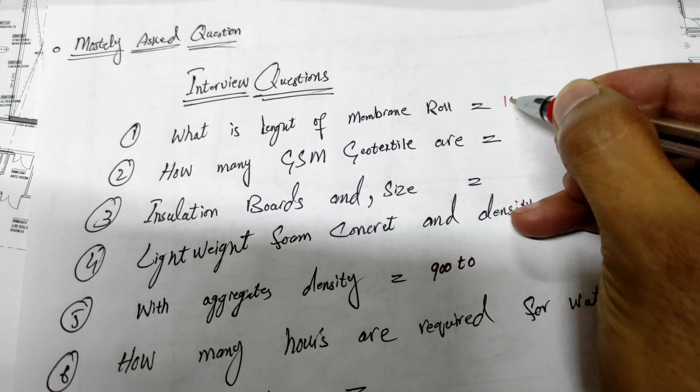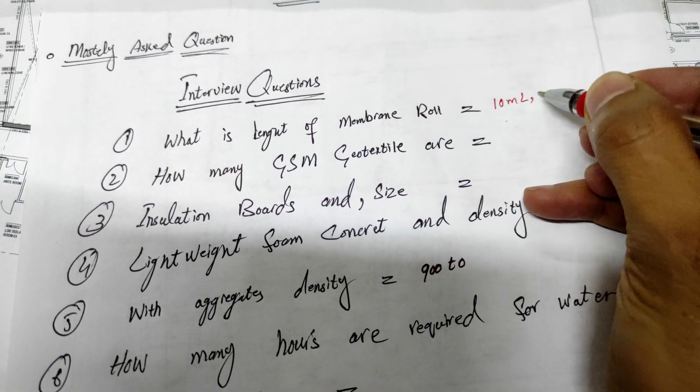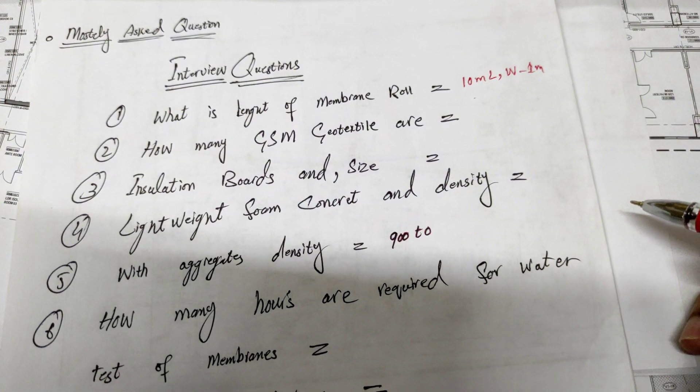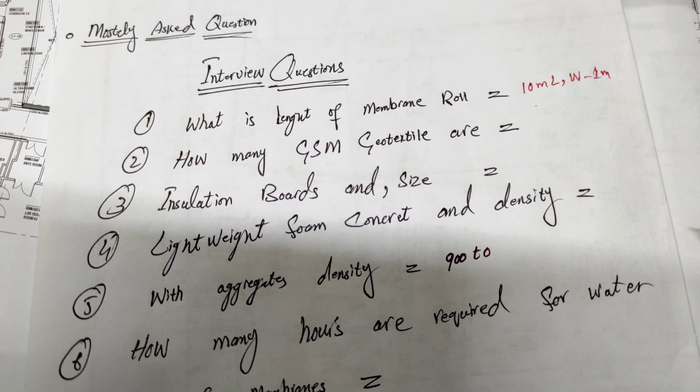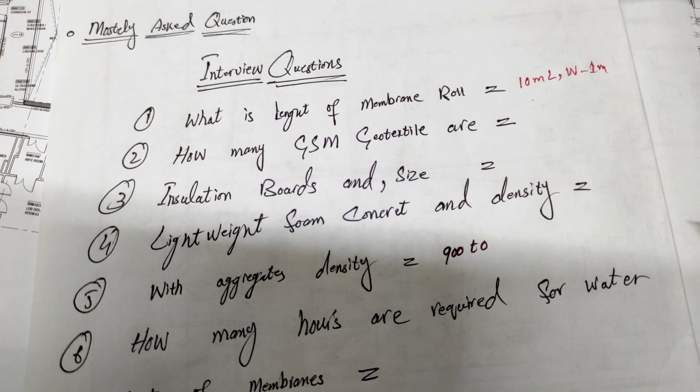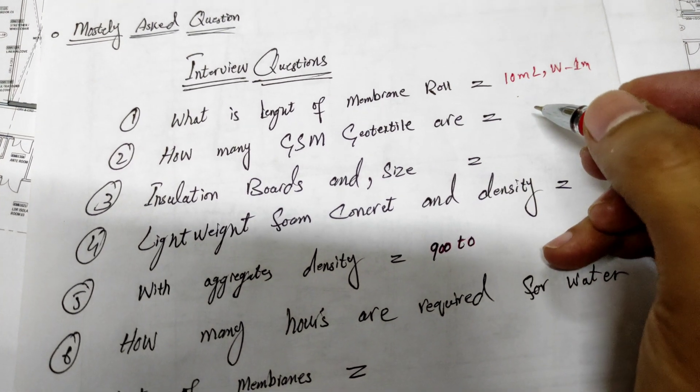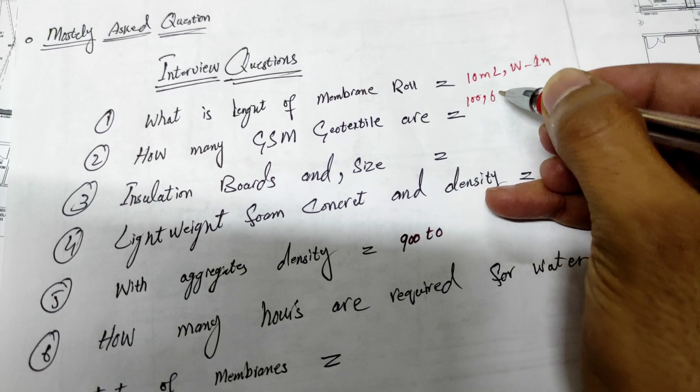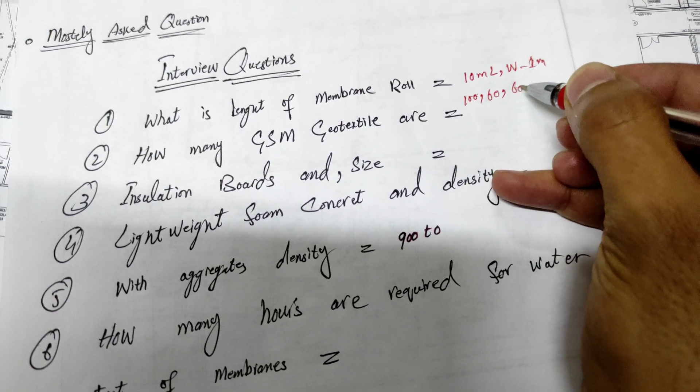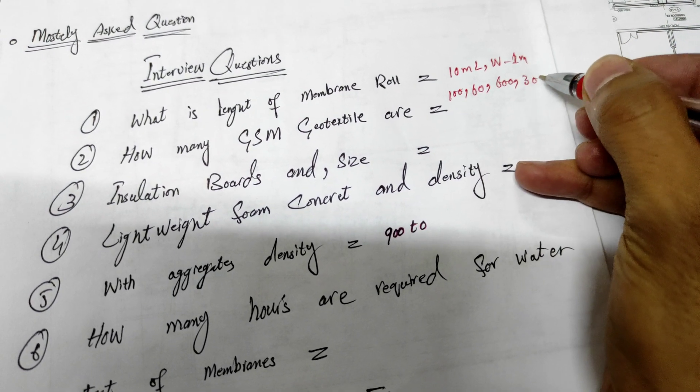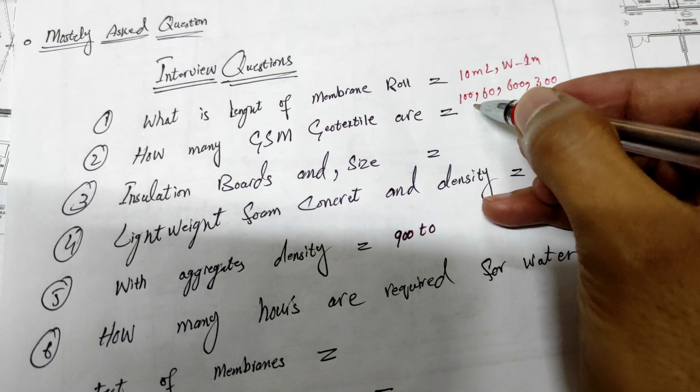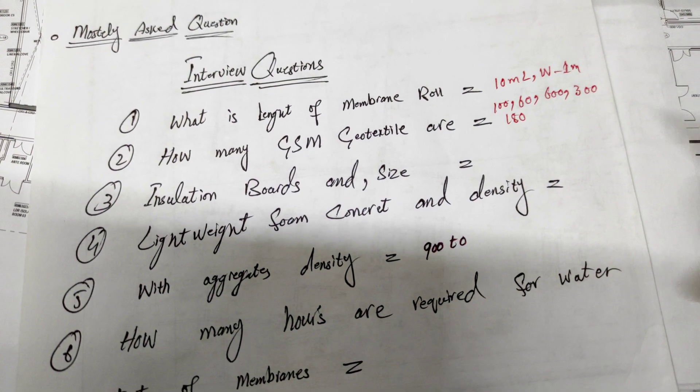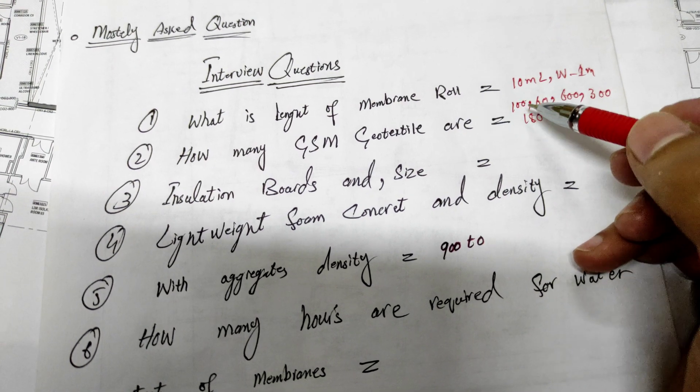Second: How many GSM geotextiles are available? We have different types of GSM: 100 GSM, 60 GSM, 600 GSM, 300 GSM, and 180 GSM. Mostly we are using 100 GSM on the roof.